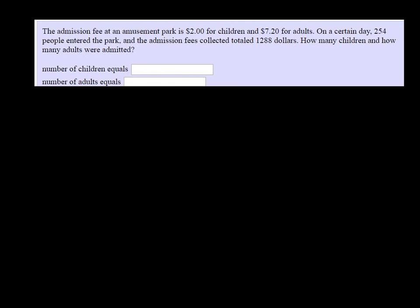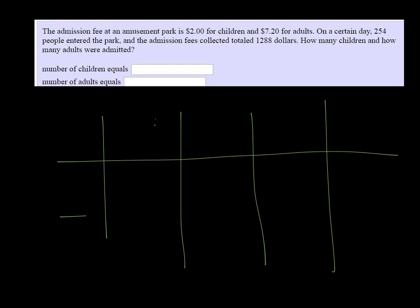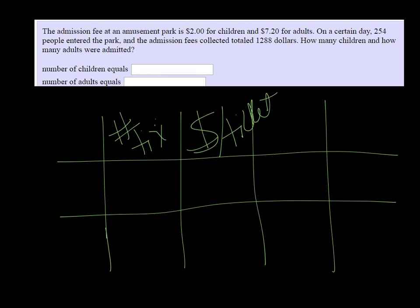All right, so let's make a little chart. And that should be plenty of lines. So we have the number of tickets sold times the price per ticket is going to be the total amount collected, total money.